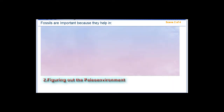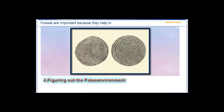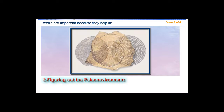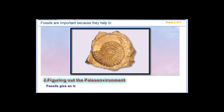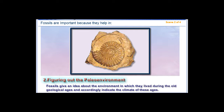2. Figuring Out the Paleo Environment. Fossils give an idea about the environment in which organisms lived during the old geological ages and accordingly indicate the climate of these ages.